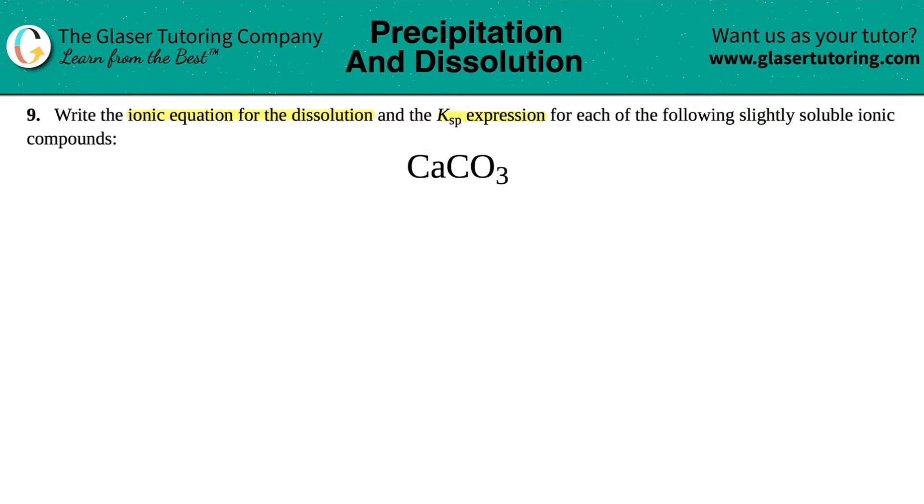And when calcium carbonate dissolves, it's going to dissolve into its ions. So we've got to start with the compound that we're given, CaCO3. And since they told us that it's slightly soluble, that means that at equilibrium, so I need to show double arrows, at equilibrium this is not going to dissolve too much, which means that it started as a solid.